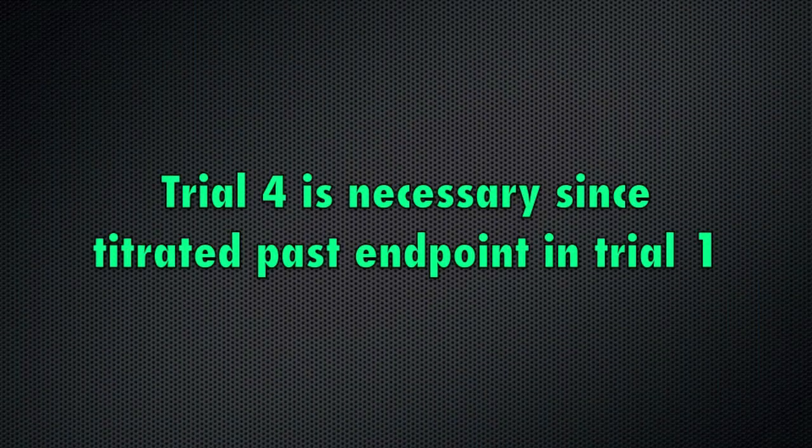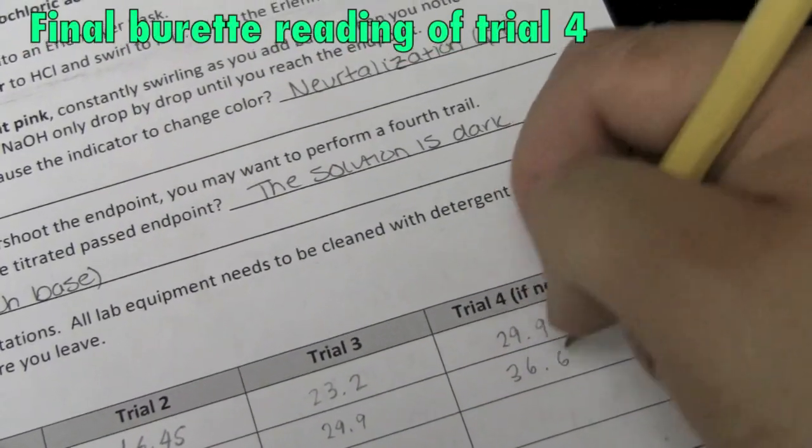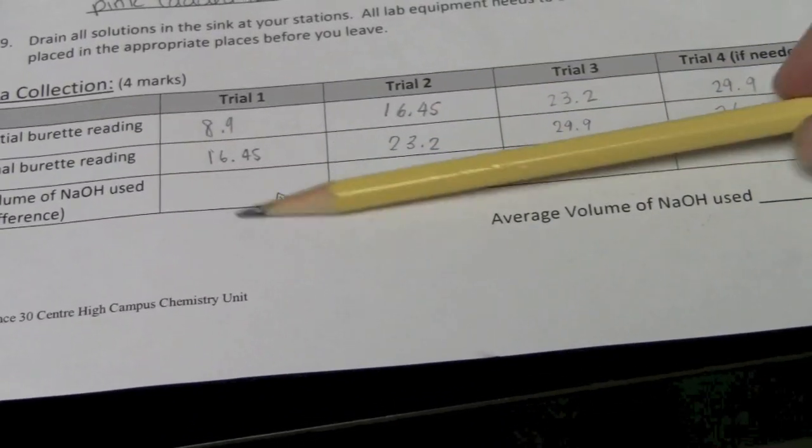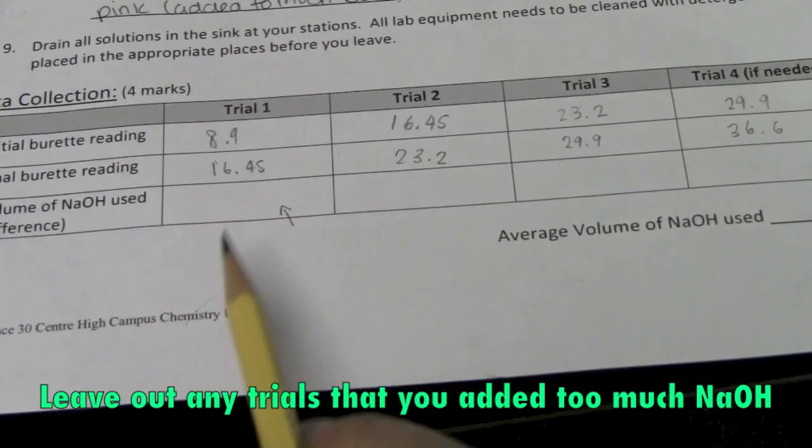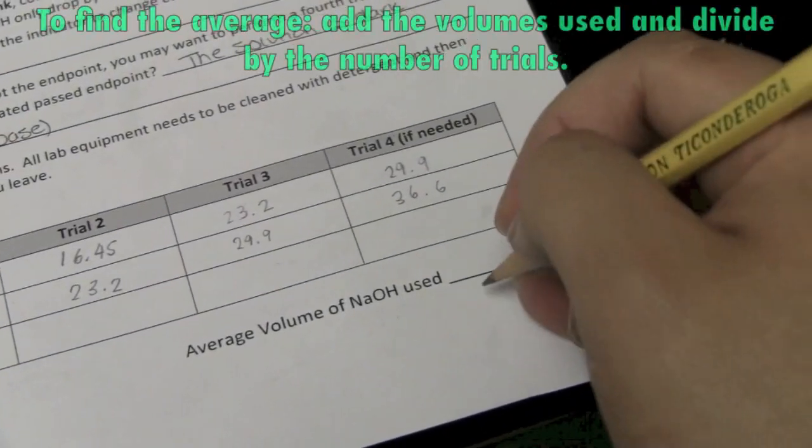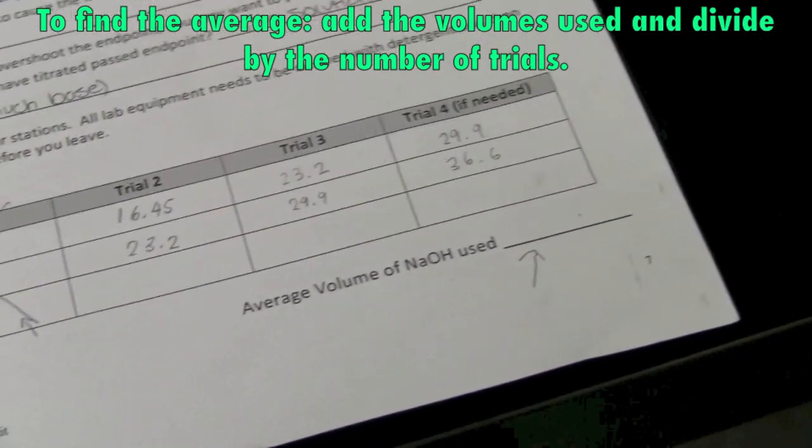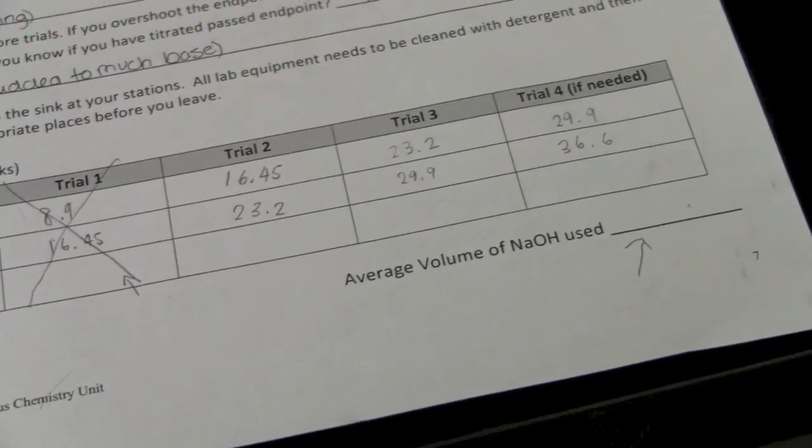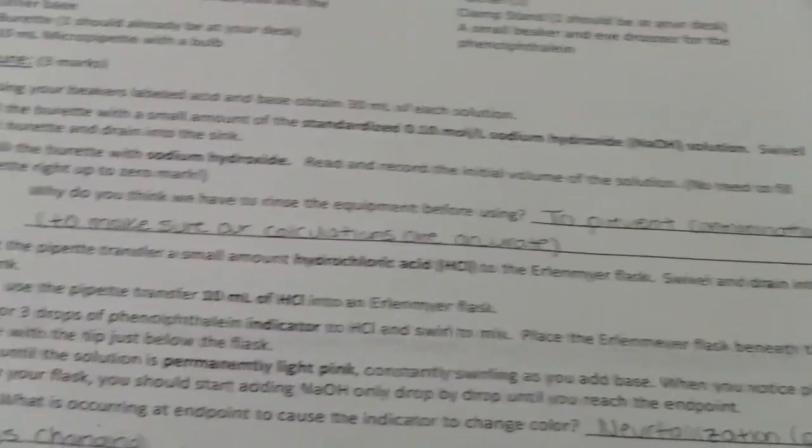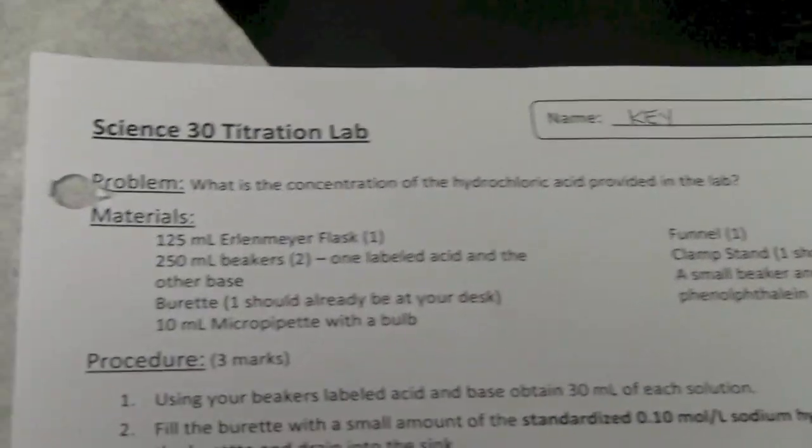So all you have to do is you're going to use this. And of course, because we overshot this one, we're not going to use that as a trial. You're going to calculate the average volume of sodium hydroxide used and you're ready to calculate for the concentration of hydrochloric acid, which is the problem of this lab.